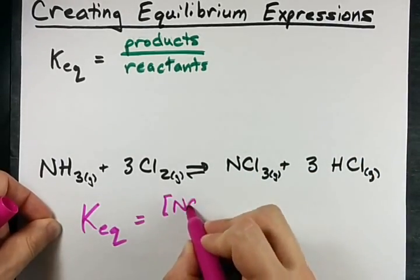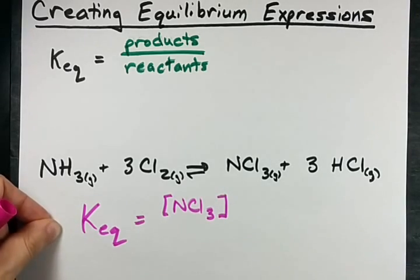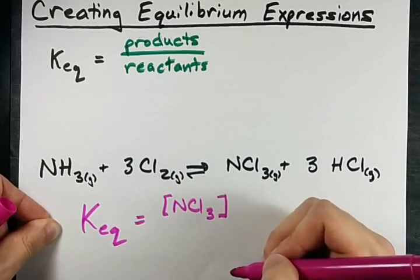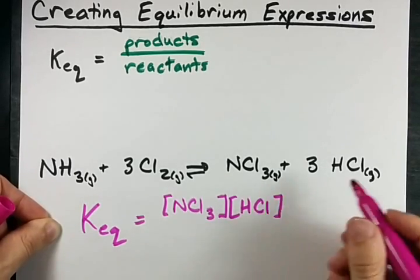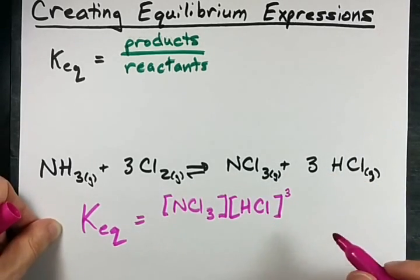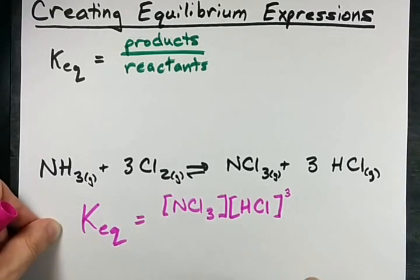One of my products is NCl3 and it's a gas so I include it. The exponent is 1 because the coefficient is 1. HCl is also a product included because it's a gas and the exponent is 3. So that concentration gets cubed when you figure out what KEQ is.